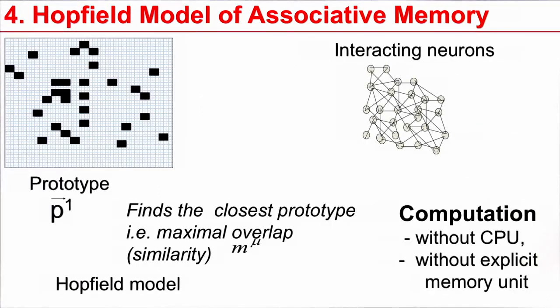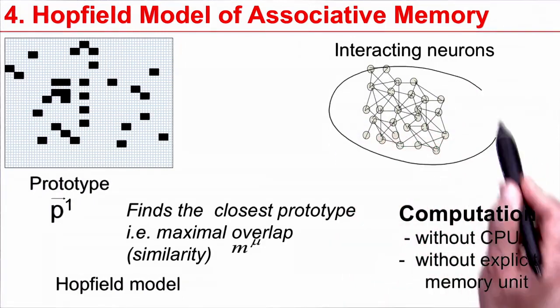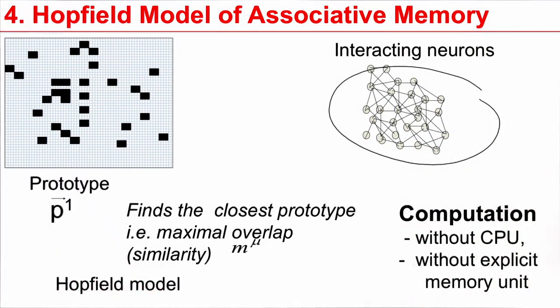Before we do this, let's wrap up as an intermediate conclusion. I have stored in a network of interacting neurons different prototypes. The prototypes are random patterns. I've stored several of these. Implicitly, these interacting neurons calculate similarity and find the closest prototype because the dynamics implicitly implements the overlap mu. The whole thing runs without explicit control unit, without explicit memory unit. The memory is in the connections.